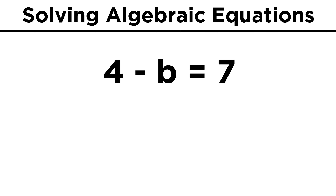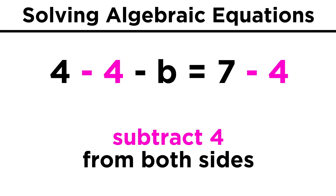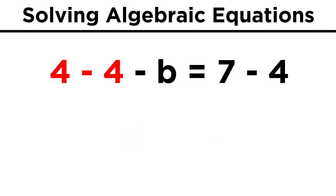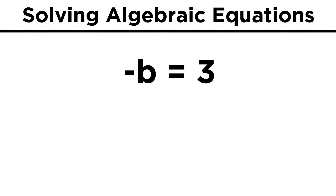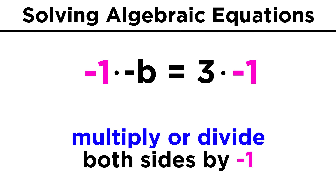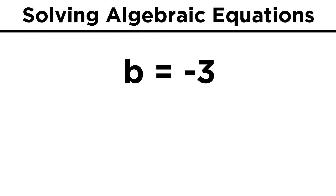How about something a little harder, like four minus b equals seven? The order might look a little confusing, but we still just need to get rid of this four, so let's subtract four from both sides. That will leave negative b equals seven minus four, which is three. We want to know the value of positive b, so we just have to either multiply or divide both sides by negative one. That will mean that b equals negative three.